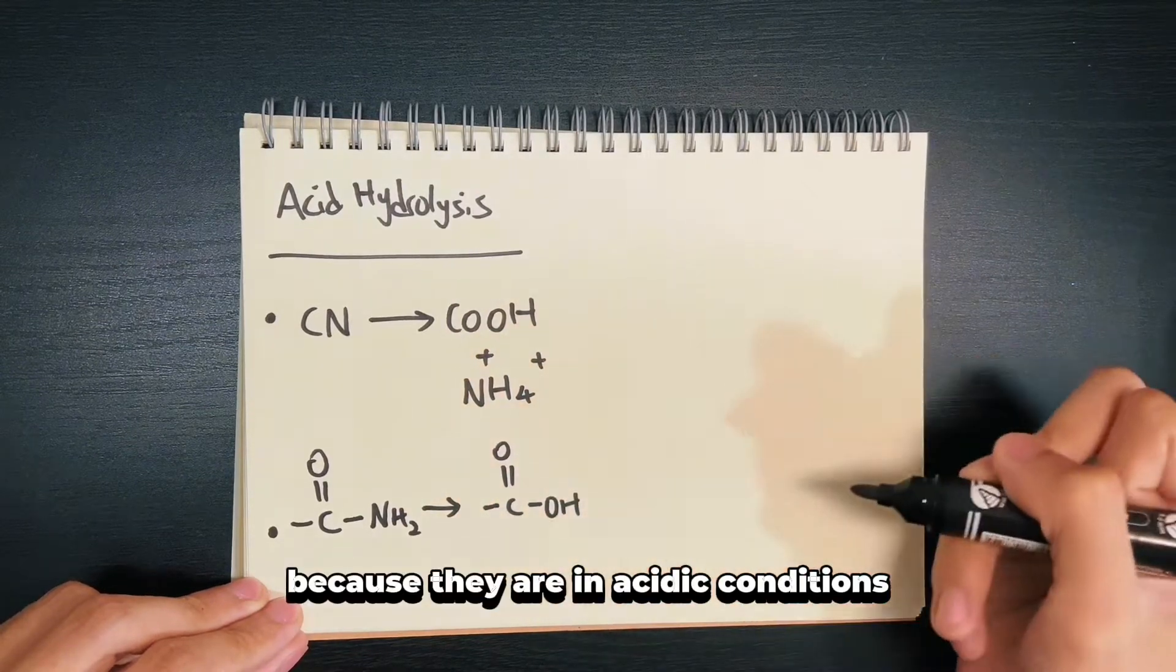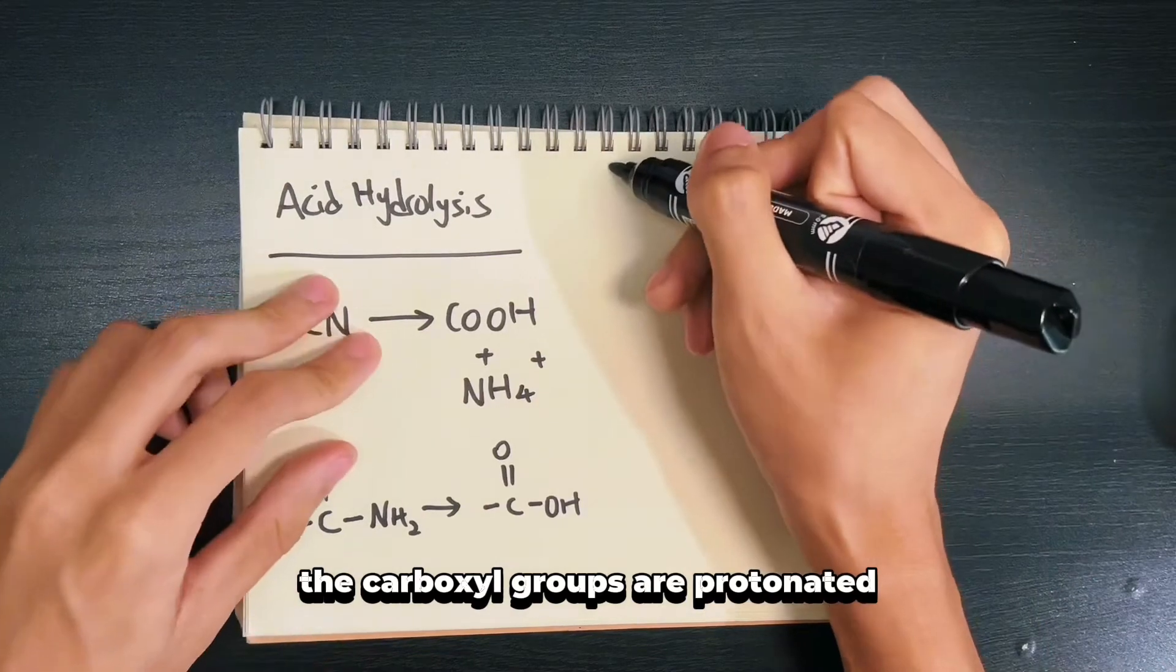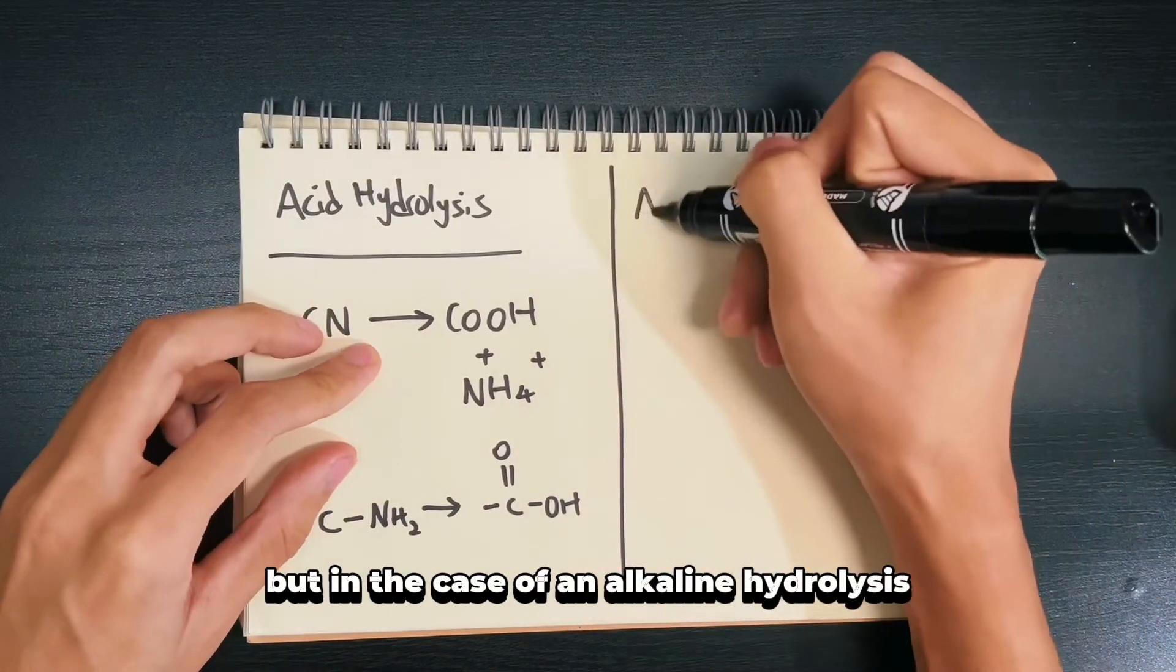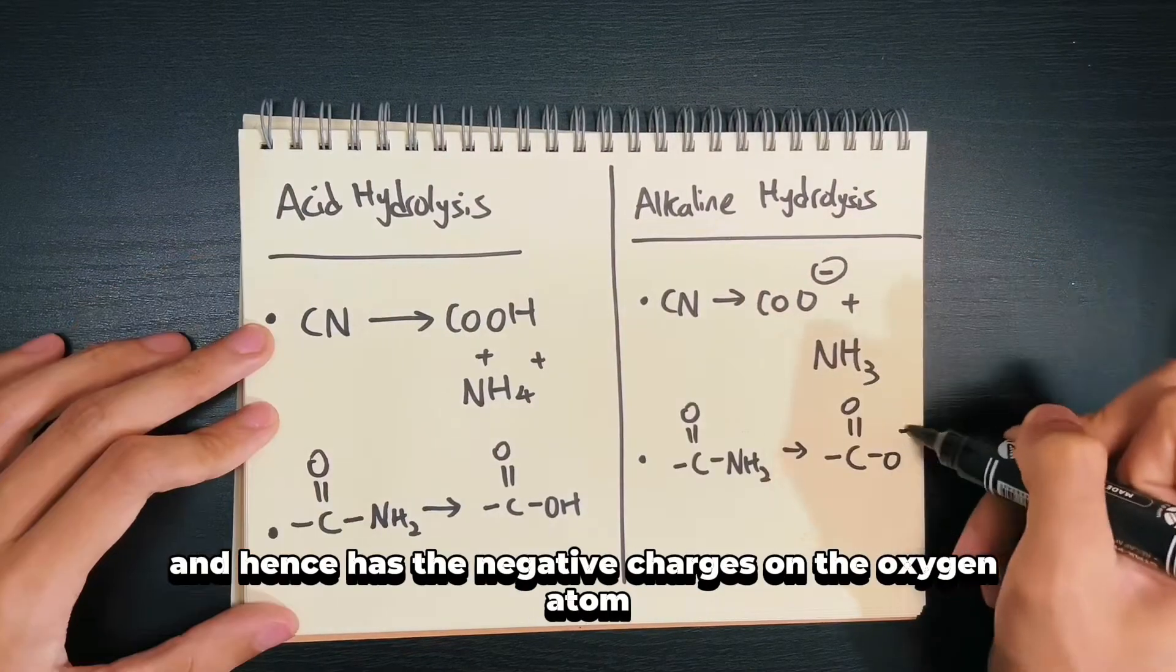Because they are in acidic conditions with a lot of H+ protons surrounding it, the carboxyl groups are protonated. But in the case of alkaline hydrolysis, the carboxyl groups are deprotonated and hence has the negative charges on the oxygen atom.